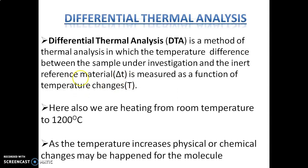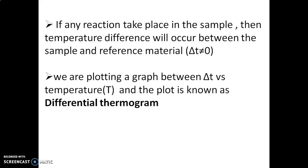Similar to TGA, in DTA we also heat the sample from room temperature up to 1200 degrees. As temperature increases, physical or chemical changes may occur in the molecule. If a reaction takes place in the sample, the compound either releases or absorbs energy, causing delta T to be not equal to zero. We continuously plot a graph of delta T versus temperature, and that plot is known as a differential thermogram.